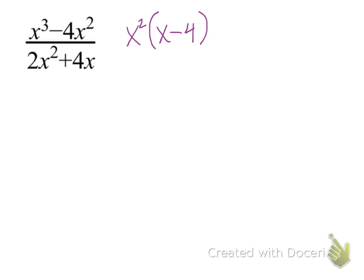On the denominator, what do 2x² and 4x have in common? They both have a factor of 2 and at least 1 x. We can factor out 2x. Then 2x times x gives us 2x², and 2x times 2 gives us 4x. Now comparing factors: the numerator has x² times (x - 4); the denominator has 2, x, and (x + 2).